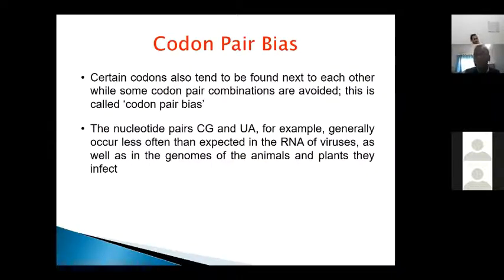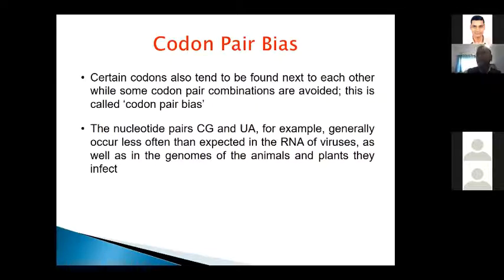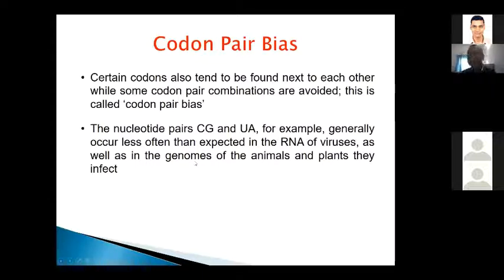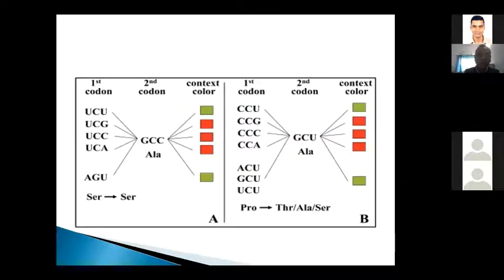Another term is codon pair bias. Codon pair bias refers to certain codons that always exist together — their combination is always maintained and cannot be separated. In some cases, nucleotide pair content also matters. For example, CpG content is low in RNA viruses but very high in plants. If you increase the CpG content in a virus, its immunogenicity or pathogenicity will increase.